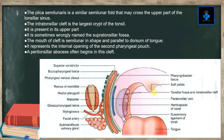The plica semilunaris is a semilunar fold that may cross the upper part of the tonsillar sinus. The intra-tonsillar cleft is the largest crypt of the tonsil, present in the upper part. It is sometimes wrongly named as the supratonsillar fossa. The mouth of the cleft is semilunar in shape and parallel to the dorsum of the tongue.